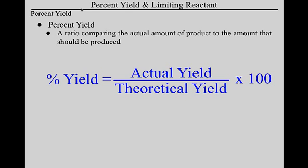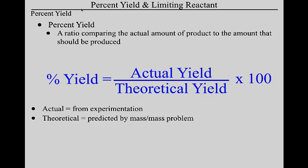Where does the actual yield come from? This comes from experimentation. You will go into lab on Thursday, do an experiment, collect the product, and weigh it — that gives you your actual yield. The theoretical yield comes from a calculation you learned to do last time; it comes from the result of a mass-mass problem. Today for homework, I will give you the actual yields, but in lab you'll weigh it yourself.